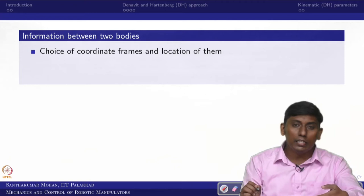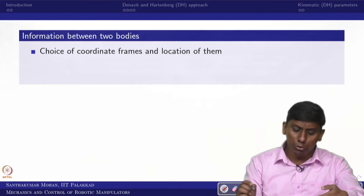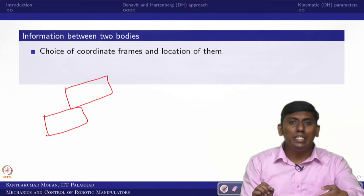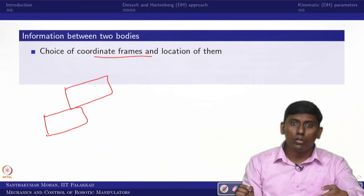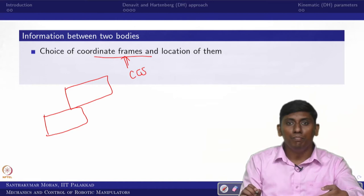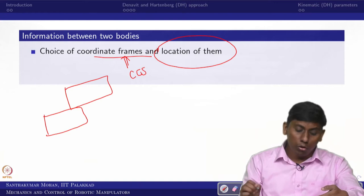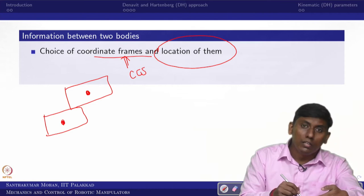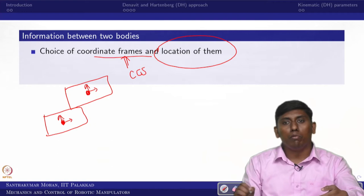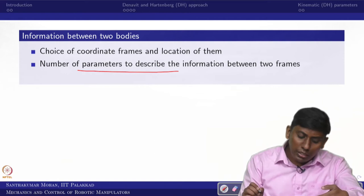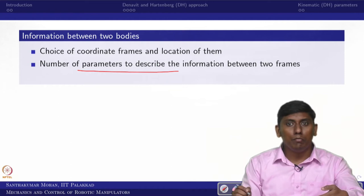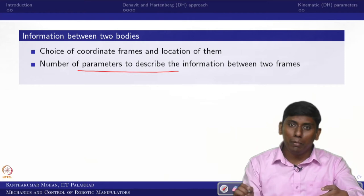When you are trying to convey information between two bodies, the easiest way is to fix coordinates. The choice of coordinate and its location are actually infinite. One of the easiest approaches is the Cartesian coordinate system, but the location is still quite open. In rigid body dynamics, people commonly take the centroid and fix the frame there, but that may not be useful for a manipulator or mechanism.